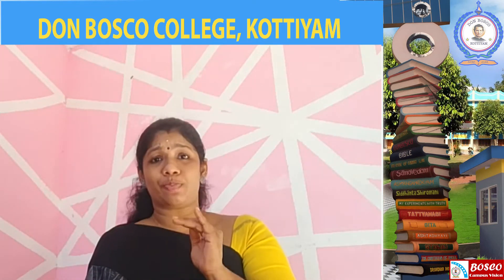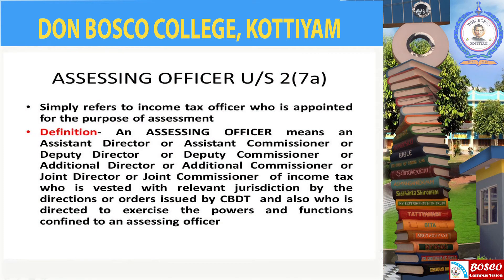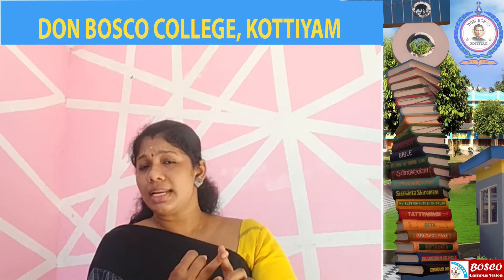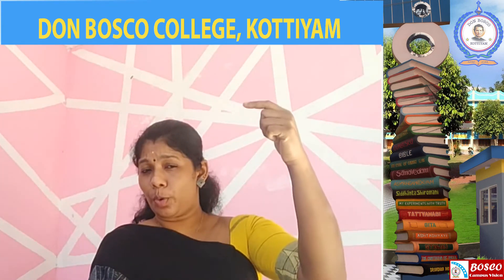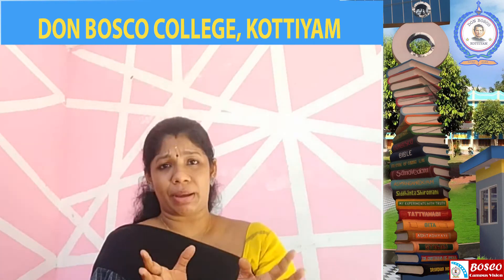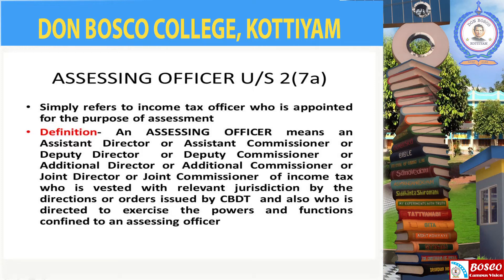Assessing Officer means an Assistant Commissioner or Assistant Director, or a Deputy Commissioner or Deputy Director, and also includes a Joint Director or Joint Commissioner, or Additional Director or Additional Commissioner, who is vested with relevant jurisdiction. Jurisdiction means the power of a person to take legal action.